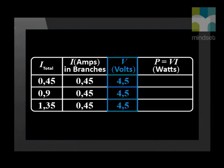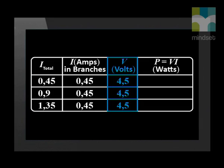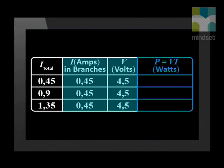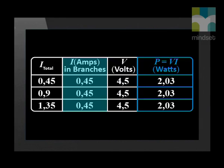Now let's look at the voltmeter readings. What do you notice? We can see that the voltmeter readings remain the same. Now let's use these measurements to calculate the power in each case. We'll first calculate the power supplied to each light bulb. To calculate the power in each branch, we use the current reading in each branch as well as the voltmeter reading. Here you can see that I have completed the table.